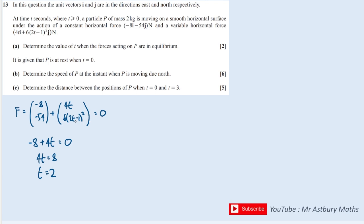We can also check that it solves the bottom equation. 2 times 2 is 4, minus 1 is 3, squared is 9, times by 6 is 54, and then minus 54 there. So yes, it works with both components. Now it says it's at rest when T equals zero.